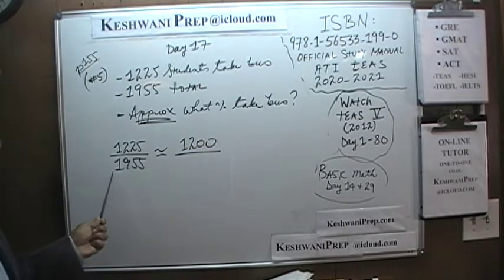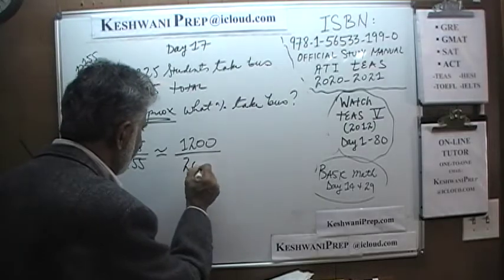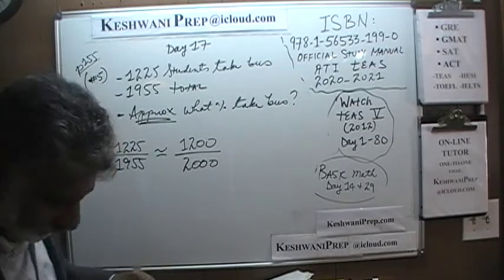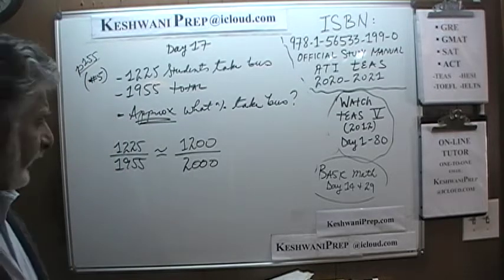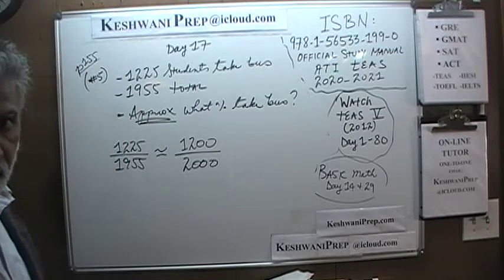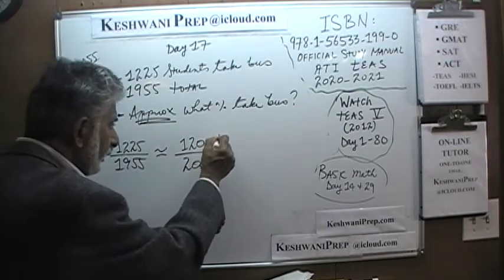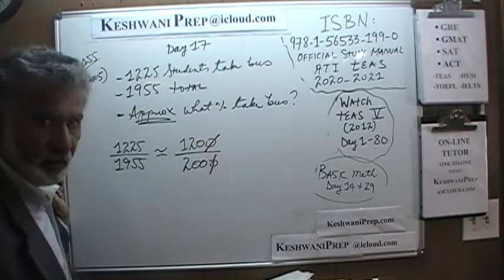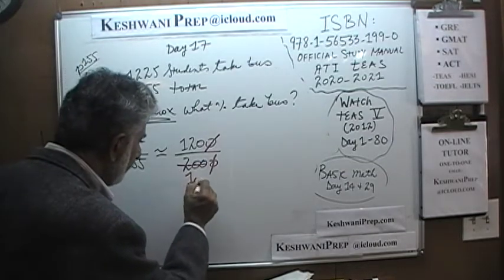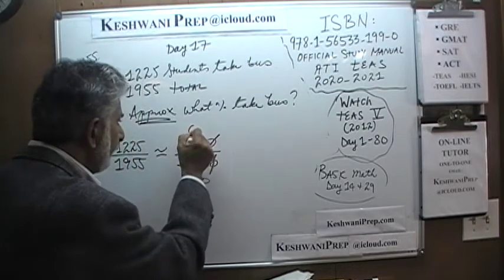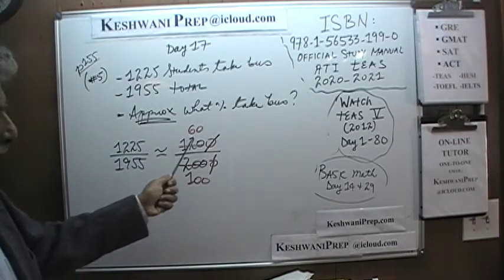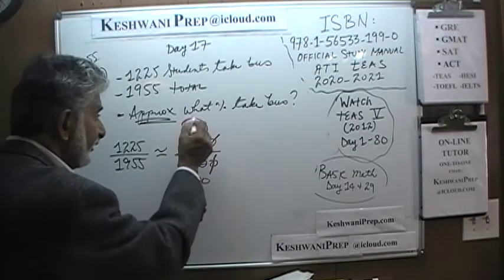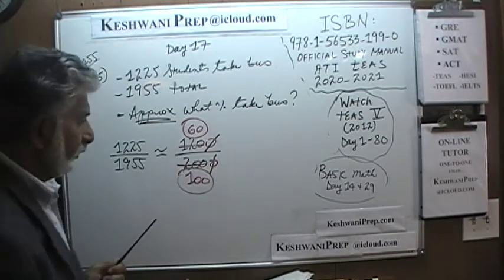And the bottom, 1955 — let's approximate it as 2000. First, divide top and bottom by 10, so the zeros drop out. Then divide top and bottom by 2: 120 divided by 2 is 60, and 200 divided by 2 is 100. If it's 60 out of 100, of course that's 60 percent.